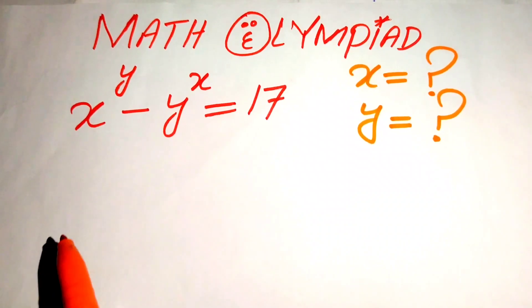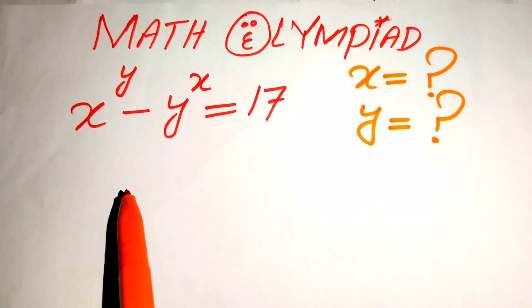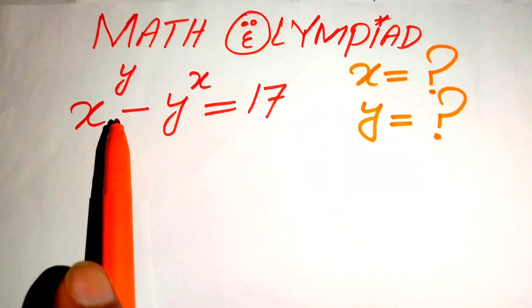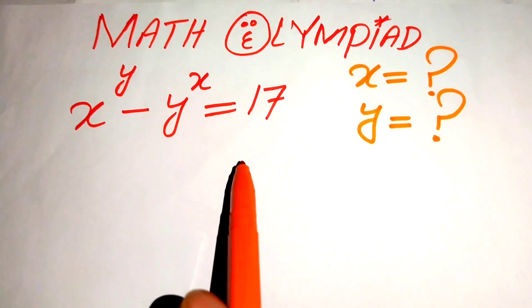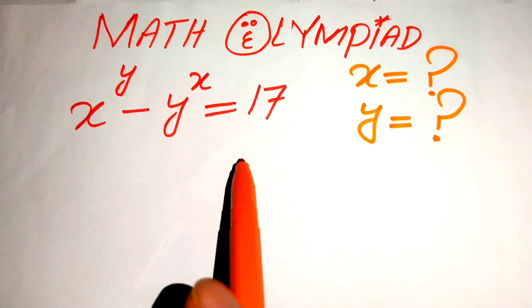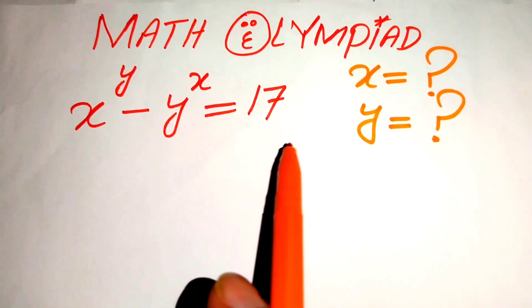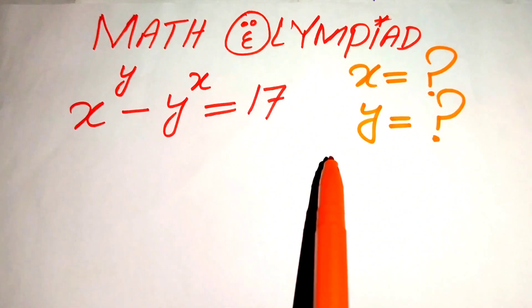Hello everyone, welcome to solve this method lumped exponential equation problem. Here we have x to the power of y minus y to the power of x equals to 17, and here we solve this problem for the values of x and y.